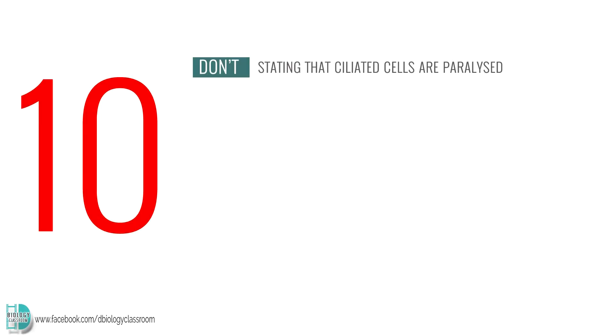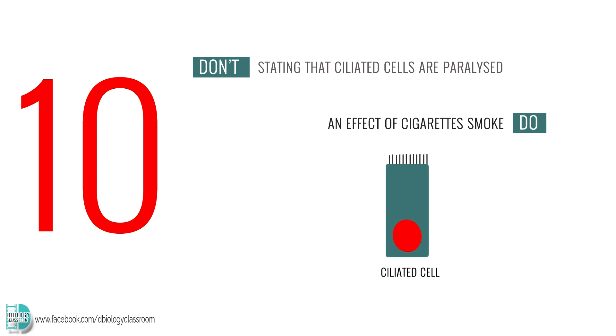Number 10: stating that ciliated cells are paralyzed. One of the effects of cigarette smoke is that the cilia of ciliated cells are paralyzed. You should not say the cells are paralyzed.